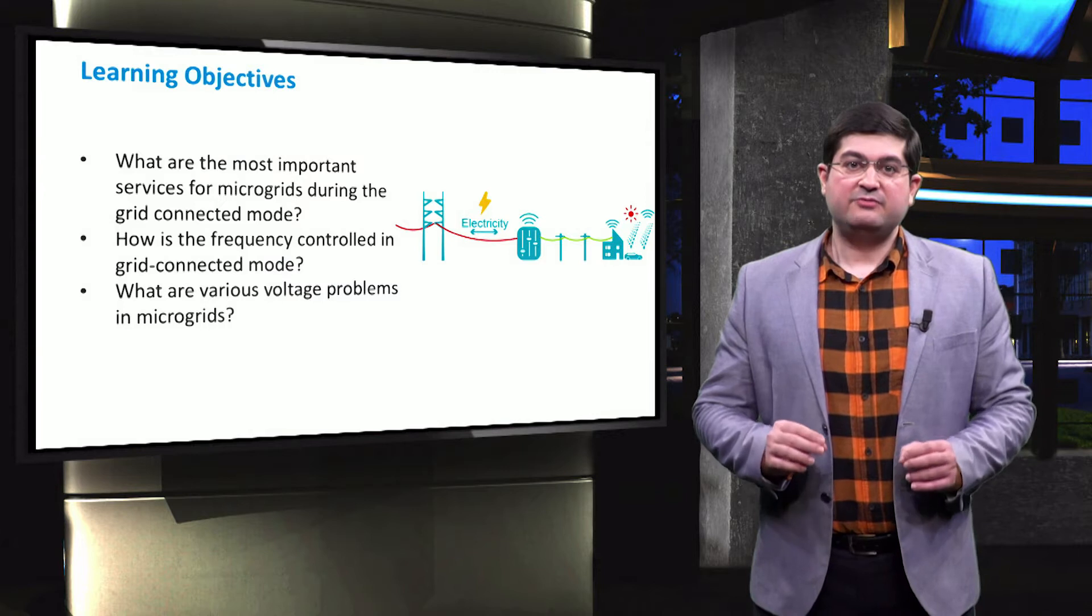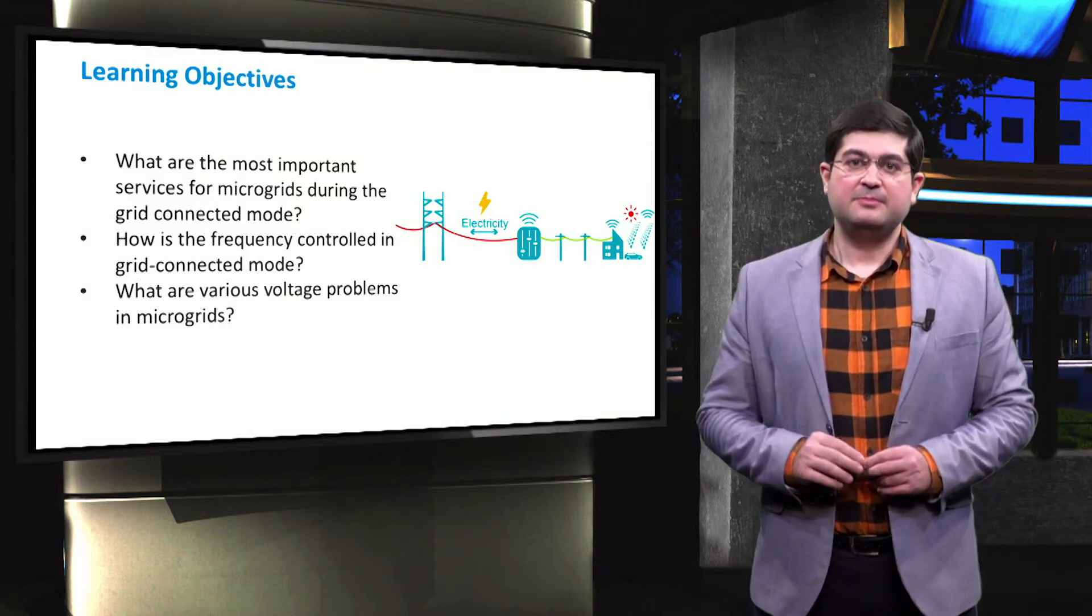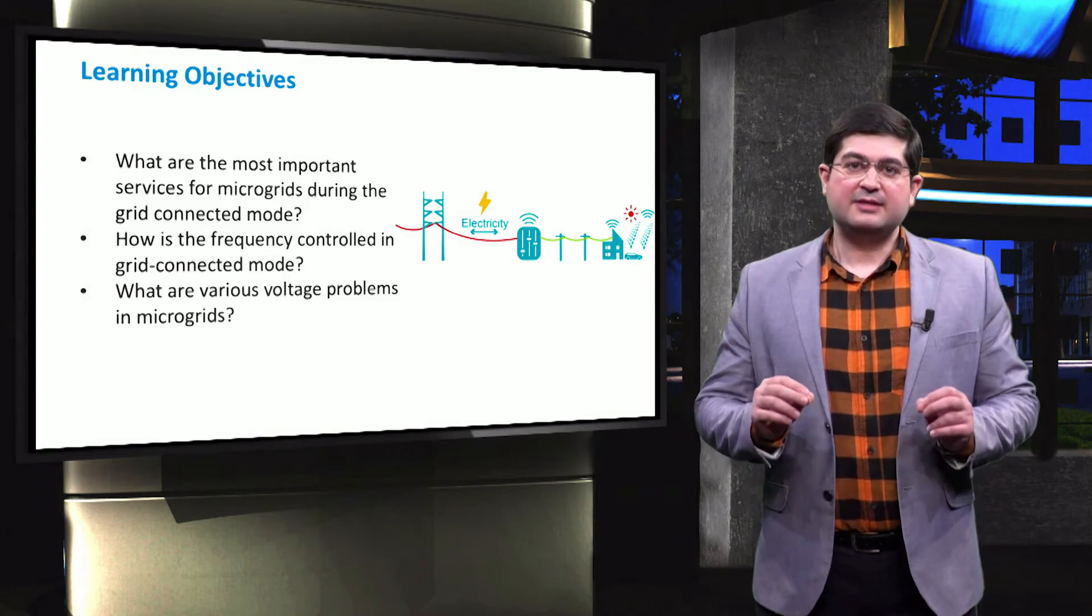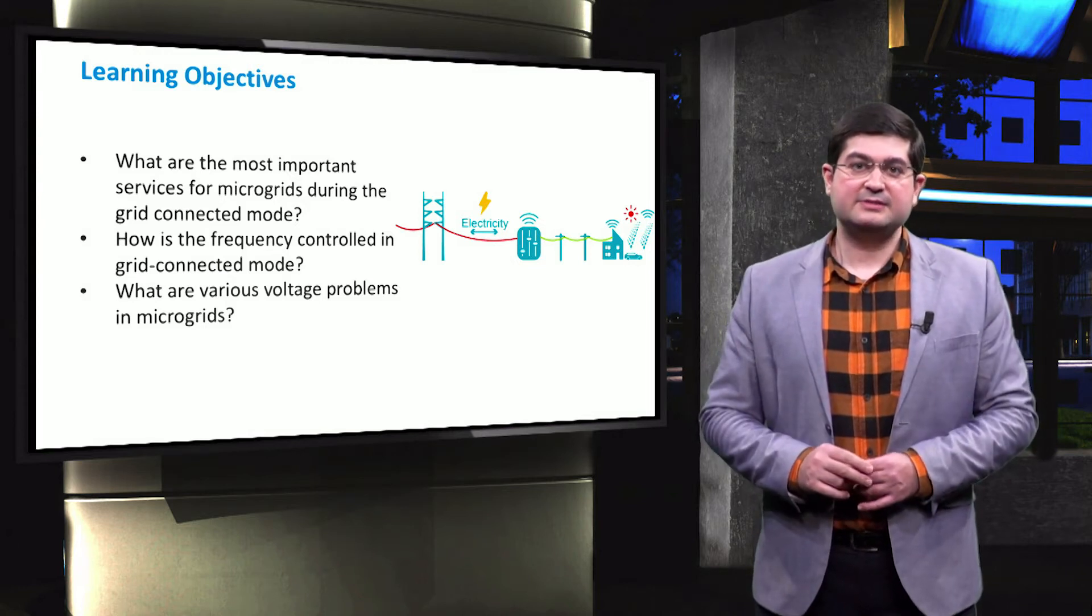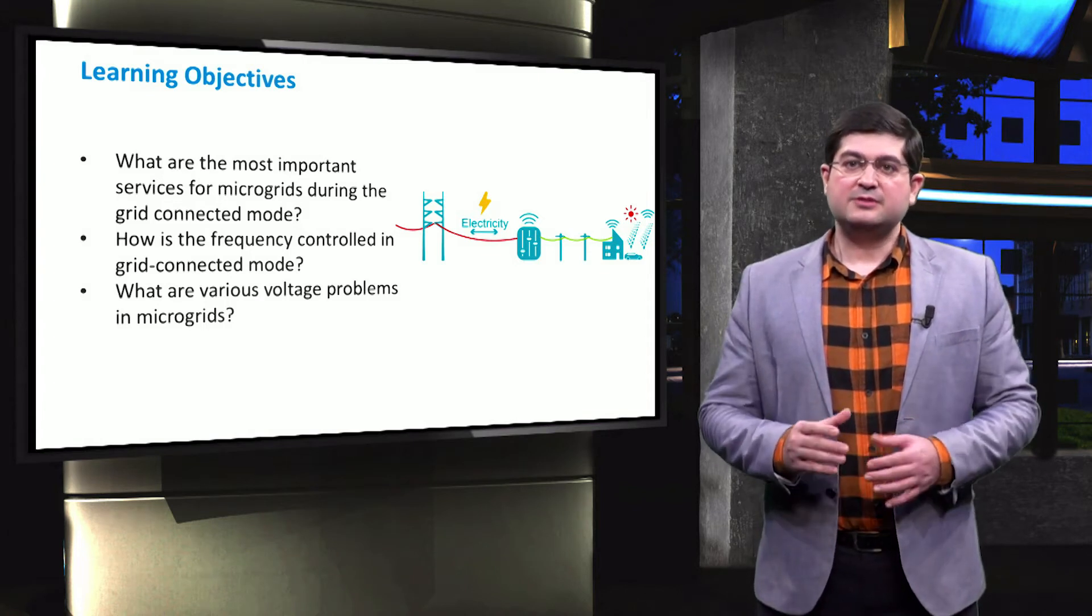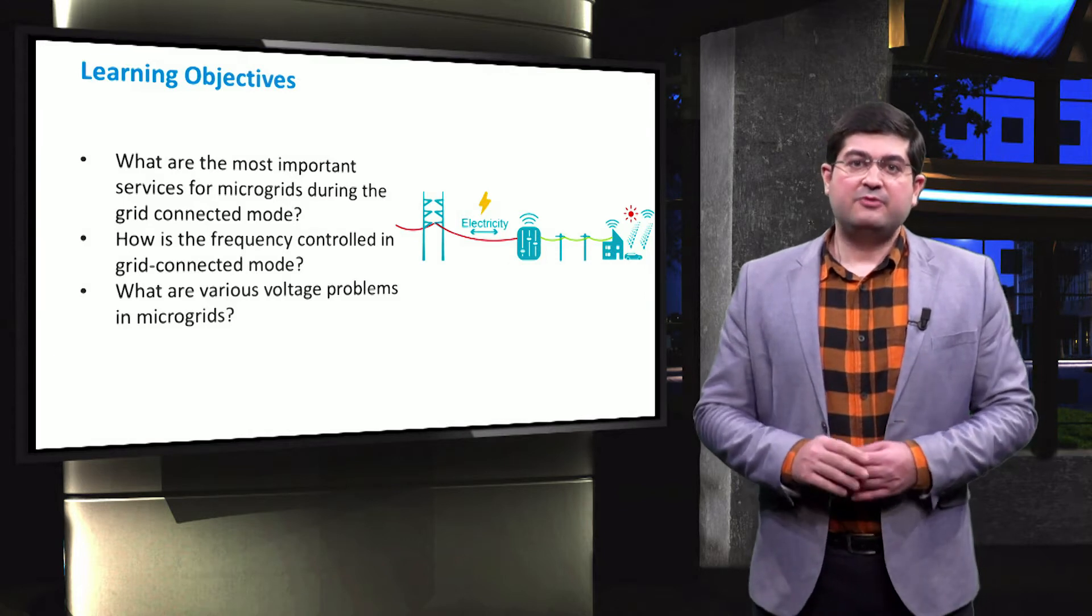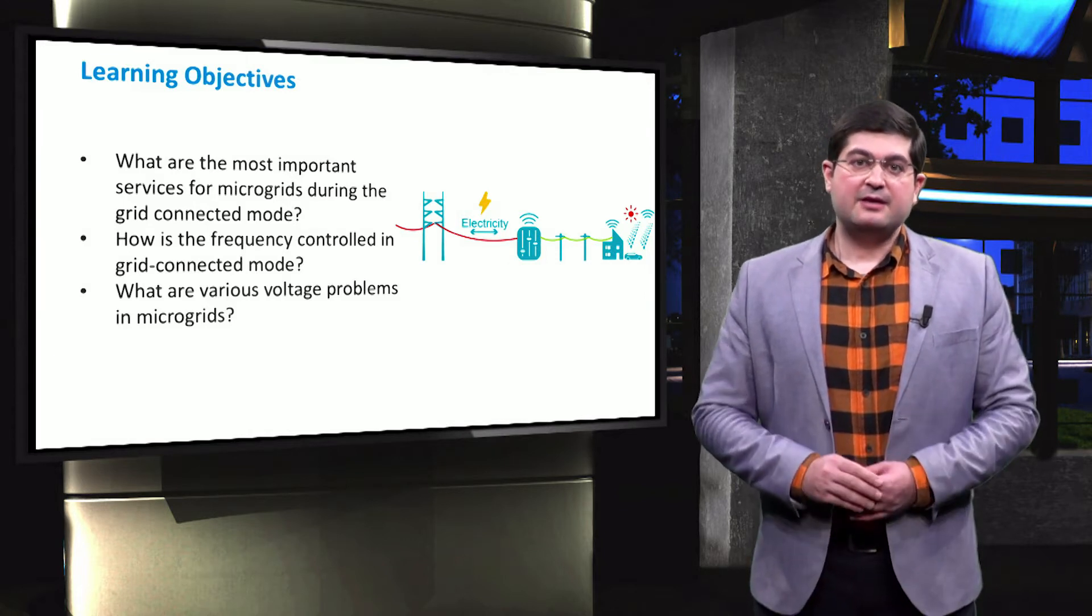The main learning objectives fall under three main questions. First, what are the most important ancillary services for microgrids during grid-connected mode? Second, how is frequency controlled in grid-connected mode? Third, what are various voltage problems in microgrids?